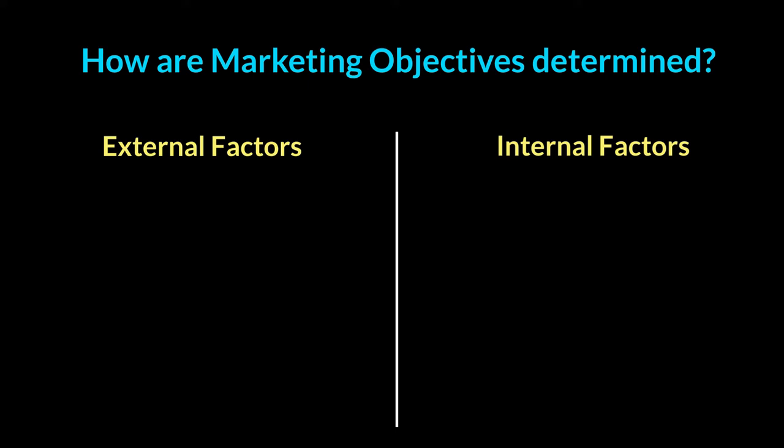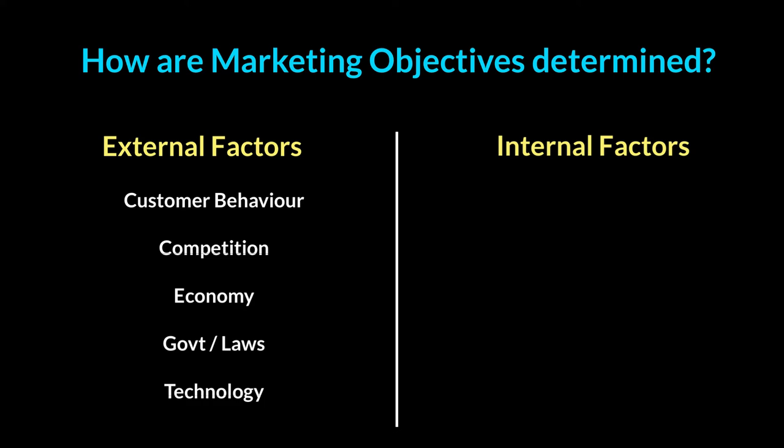These factors are divided into external and internal. Starting with external: the first is customer behavior. Customers are the other part of the market that the marketing department is dealing with. If their tastes are changing, if their spending patterns are different, if their behaviors are altering, the marketing department has to react and through their research figure out the new changes and find a product which matches that new customer demand. So customer behavior will be a big part of determining what the marketing department's objectives should be.